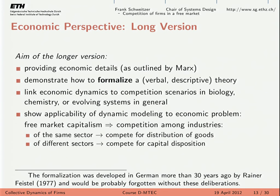Now let us go to the long version — telling the story a third time to gain deeper economic insight and to see how a complete verbal theory is formalized. In each round we understand more: first we understood the form of the selection equation, second we identified the fitness as the cost price, and now we try to understand what the cost price actually is. I follow a formalization done by Rainer Feistl, a brilliant physicist who did this as a side work for his thesis — never published, existing only as a typewritten manuscript.